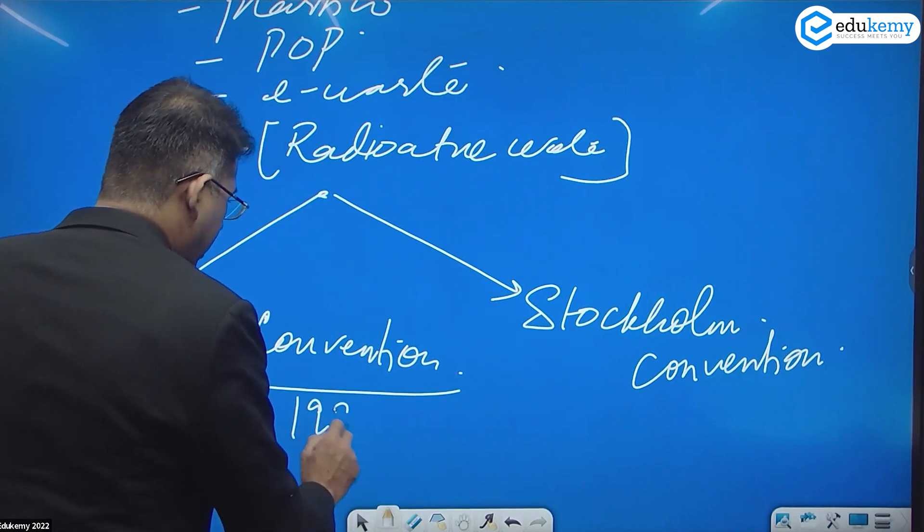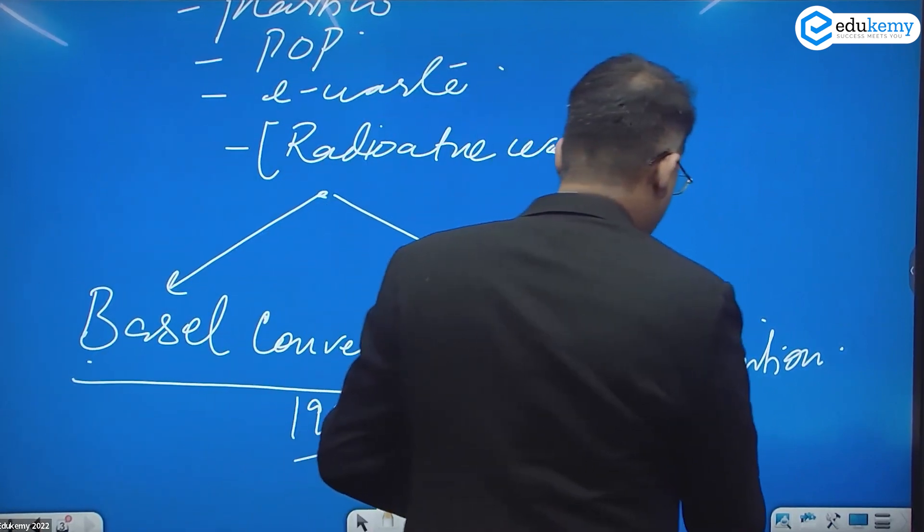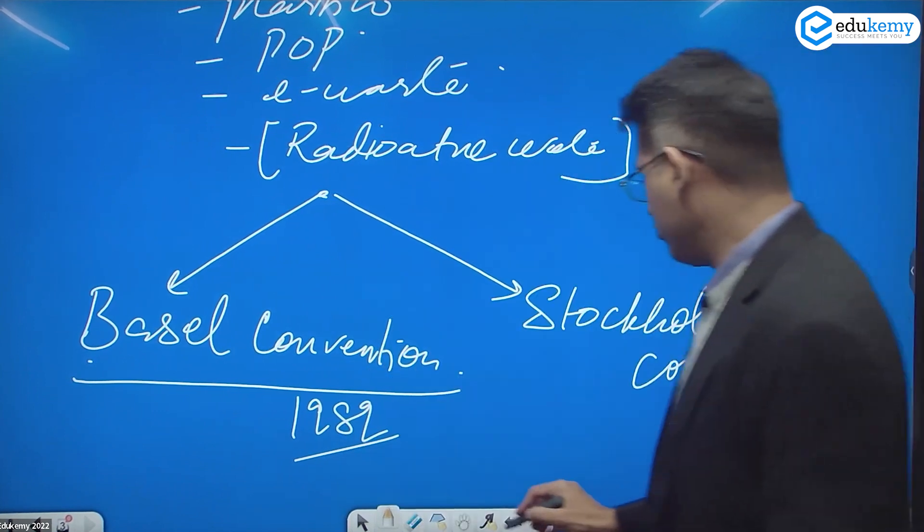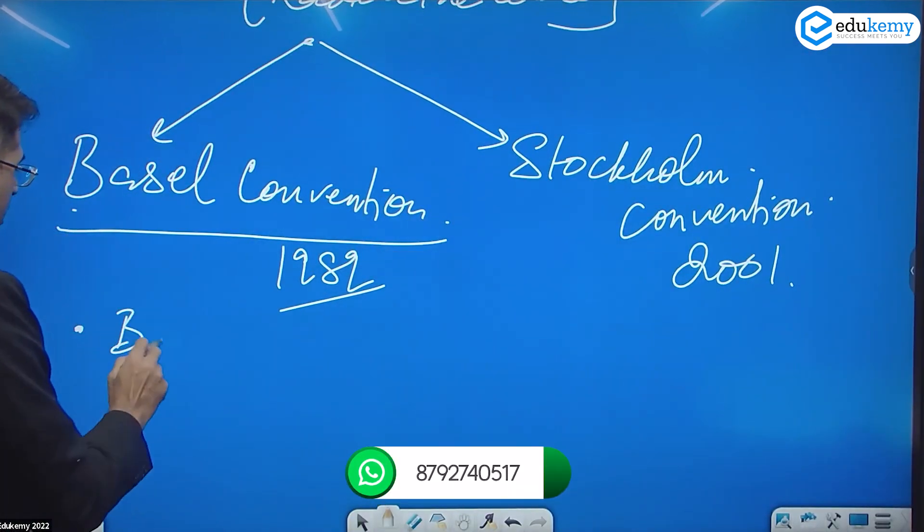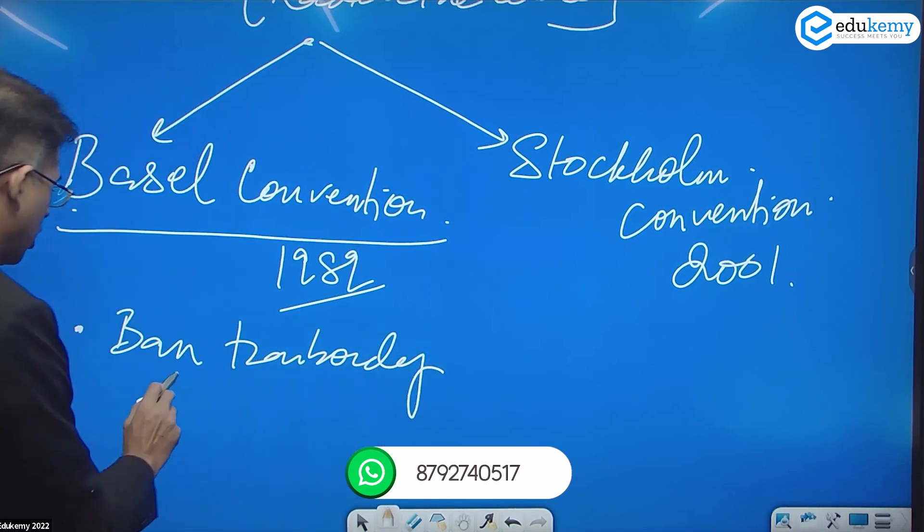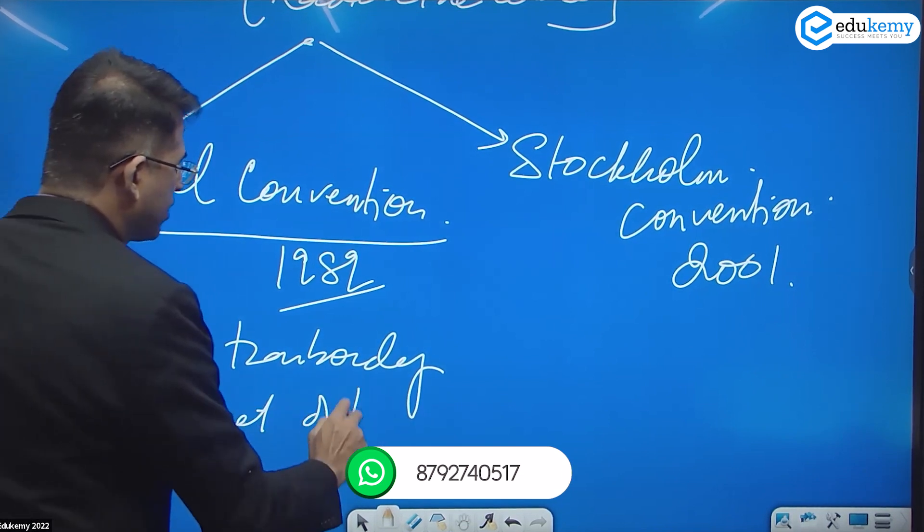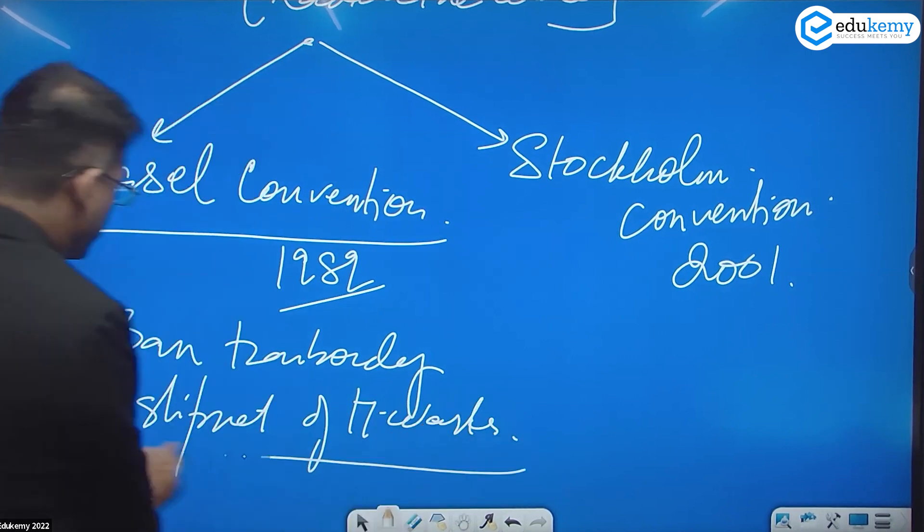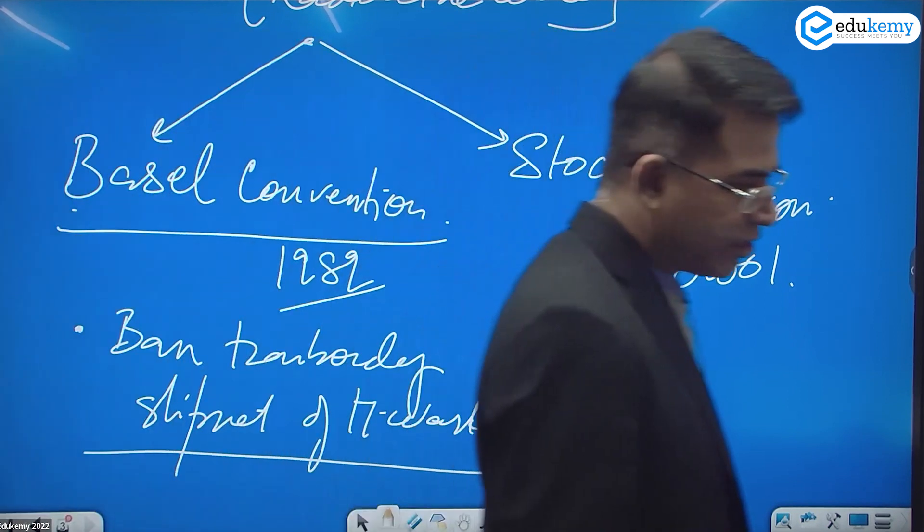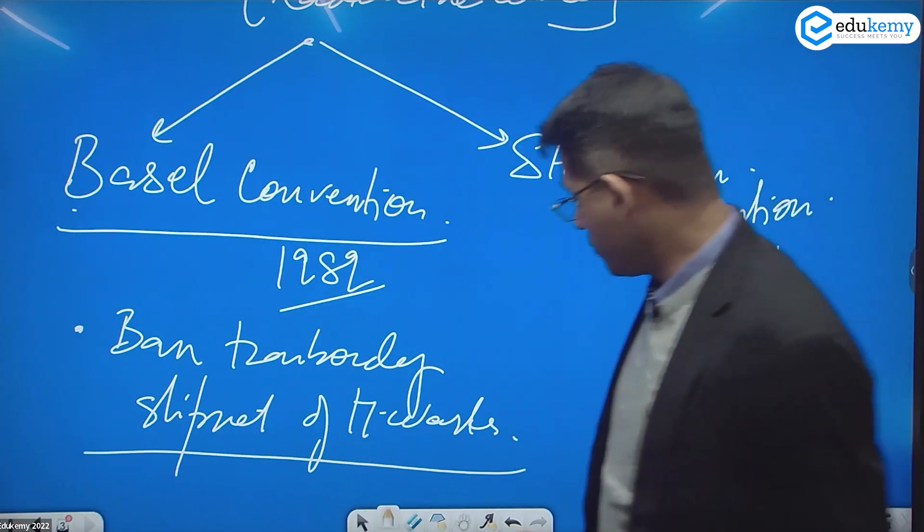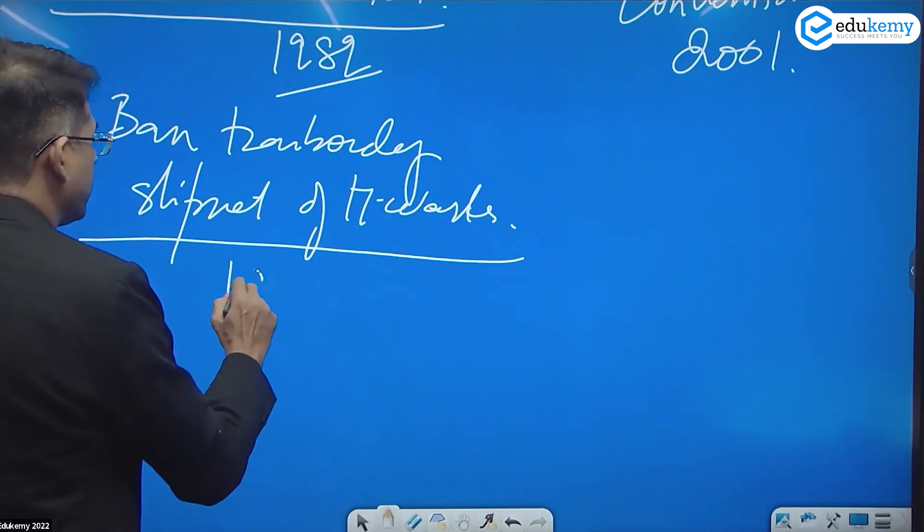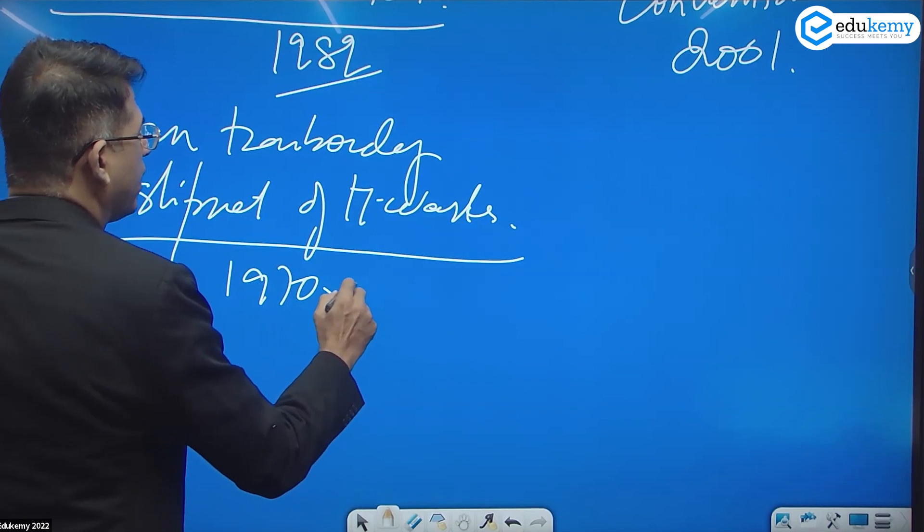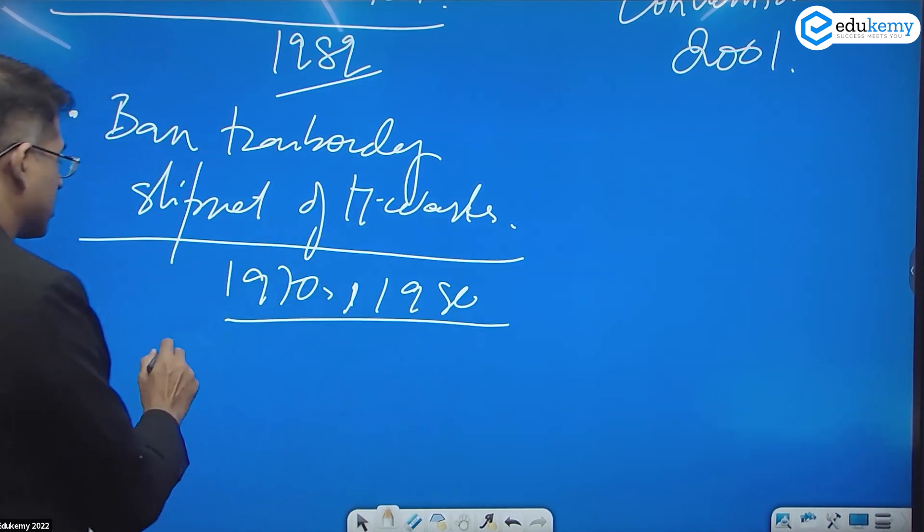Now Basel Convention's objective here is to ban trans-boundary shipment of hazardous wastes. What was happening was in the 1970s and 1980s, a lot of hazardous waste was exported to Africa.